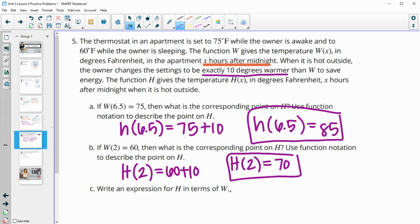And then write an expression for H in terms of W. So then H of T. So here's your W function, right? So here's your W of 6.5 or your W of 2. So you're going to take W of T, whatever she normally had it set at, and then you're going to add 10 degrees. So H of T is going to equal W of T plus 10.